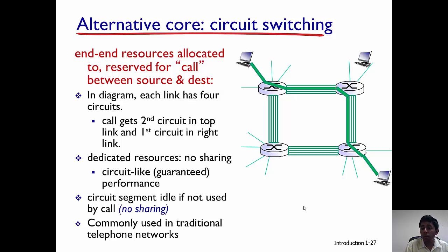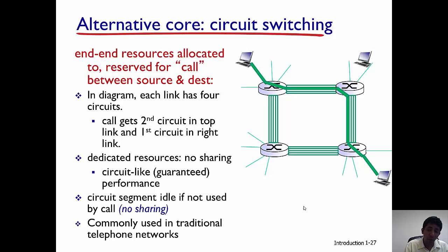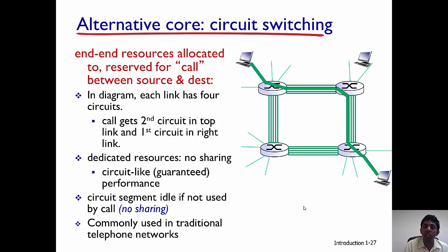Though there is a guarantee on performance, because resources have to be first allocated in a circuit switch network, there is the drawback that the call has to be set up first and the entire path has to be reserved before data can be communicated. Circuit switch networks are typically used in telephone networks, whereas in the internet it is packet switching that is widely prevalent.